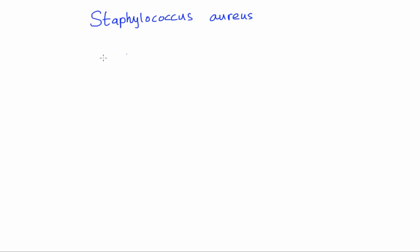Now let's look at the diseases that Staph aureus can cause and the different virulence factors that help it cause these diseases. The Staph aureus cell has many proteins called virulence factors. Some of these proteins are stuck to the cell — we call these protective proteins — and some are secreted into the extracellular environment, called exotoxins.